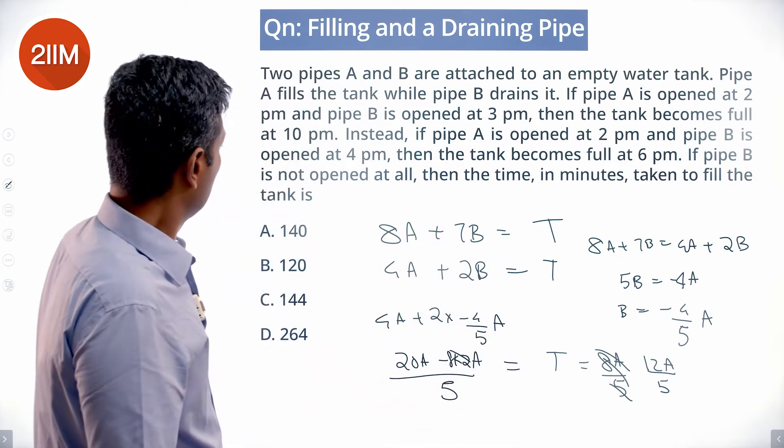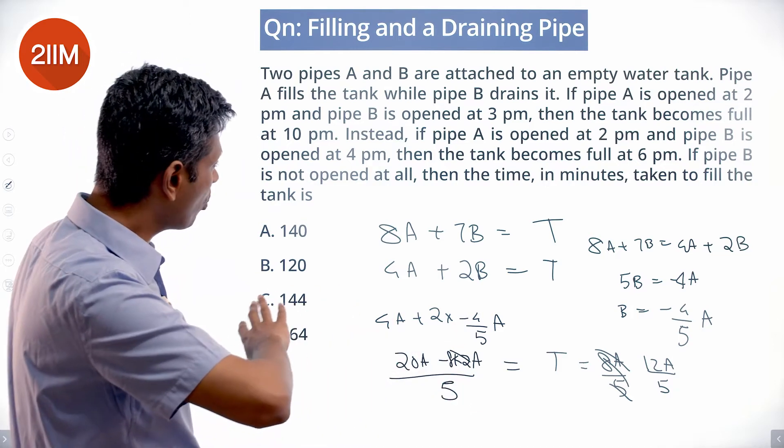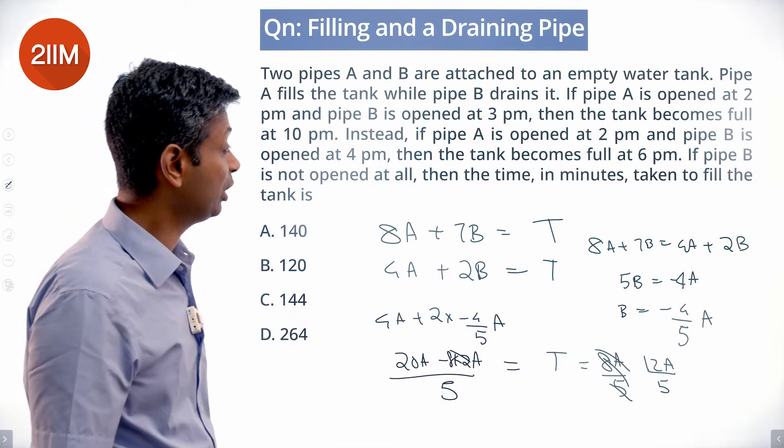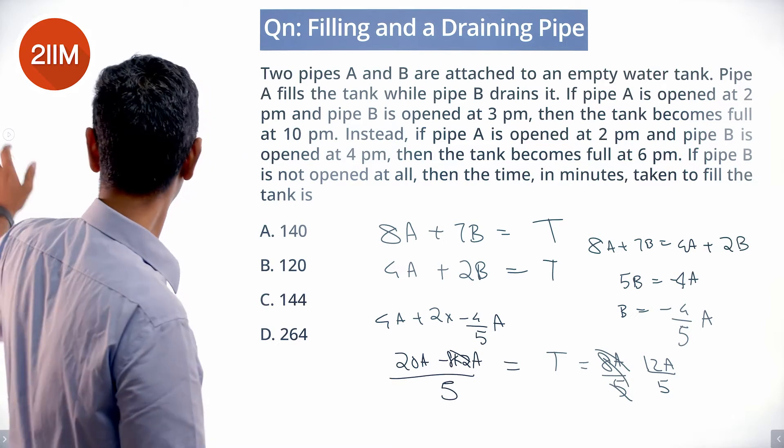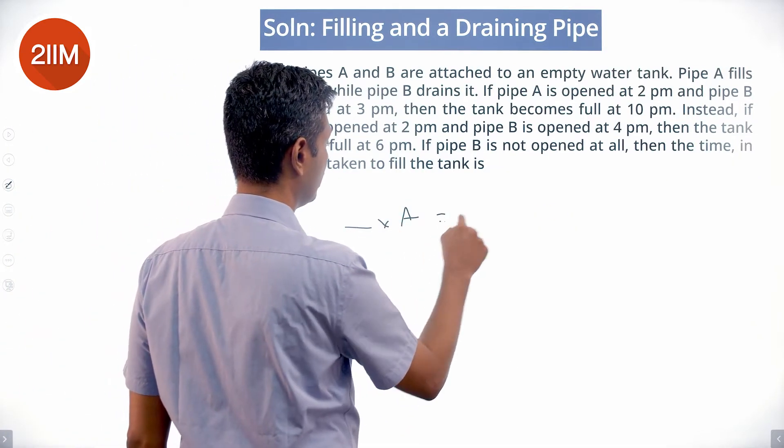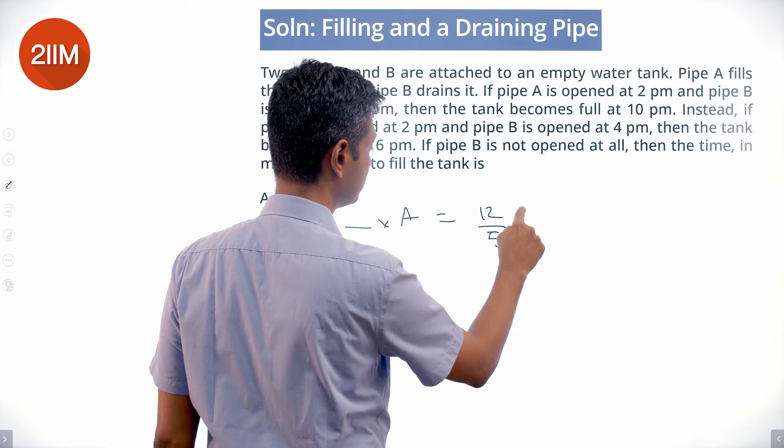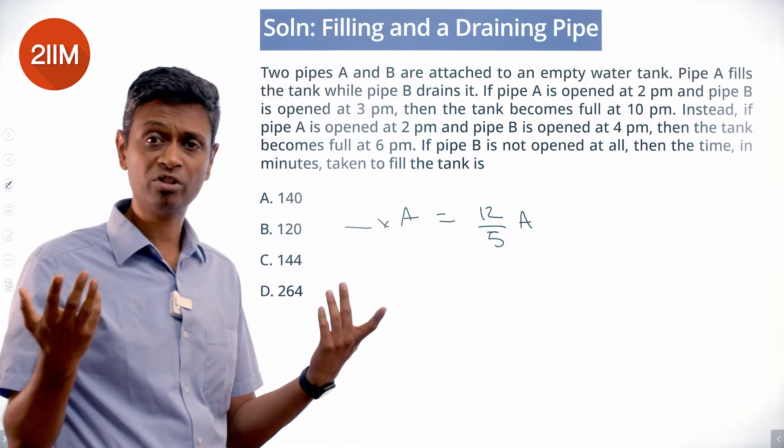If pipe B is not opened at all, then the time in minutes taken to fill the entire tank: A times time equals 12/5 A, so no B at all. The tank capacity is 12/5 A.